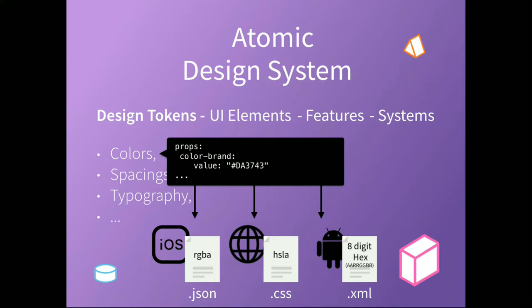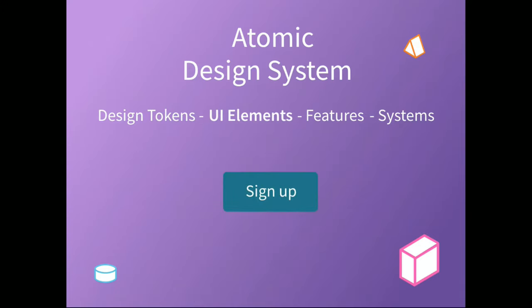For example, think of a very simple example like a color brand — you give it a value. Then maybe you want to use that for the web and encode it into a CSS module file as an HSLA value. Or maybe you're building for iOS and want that value in JSON format. Or you're building for Android and need XML with an 8-digit hex format. The idea of design tokens is having a single source of truth where designers can put their decisions and you can build against all target platforms in a very agnostic way.